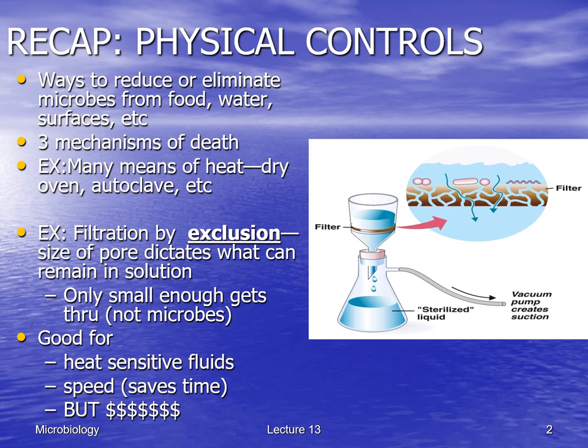Filtration is good for heat-sensitive fluids — things with vitamins, growth factors, and proteins that would denature in an autoclave or dry heat oven. It also saves time; filtering takes about a minute while autoclaving takes around an hour once you account for warming up, heat exposure, and cooling down. However, filters are very expensive, even disposable ones — money is a drawback you see in almost everything.